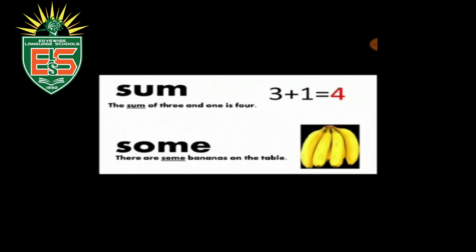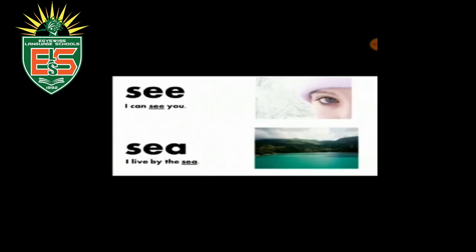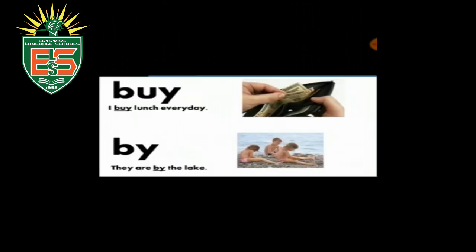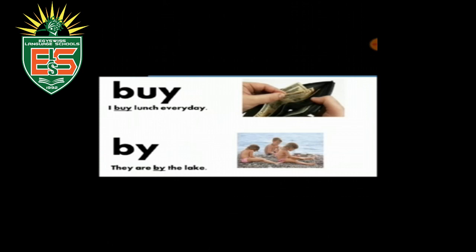'Sum' — the sum of three and one is four. 'Some' — there are some bananas on the table. 'See' — I can't see you. 'Sea' — I live by the sea. 'By' — I buy lunch every day. 'Buy' — they are by the lake.